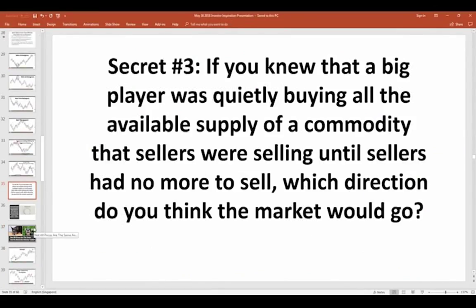If you knew that a big player was quietly buying all the available supply of a commodity and the sellers were selling until they had no more to sell — which direction do you think the market will go? If there's no more sellers in the market, the market is selling off, selling off, and reaches a level where buyers absorb all the selling. Finally the sellers don't have any more to sell — which way does the market go? If there's no more selling pressure, the market generally will naturally start rising higher. Those are great trading opportunities.